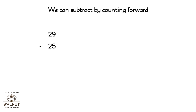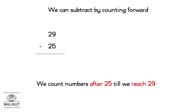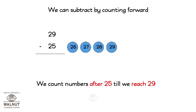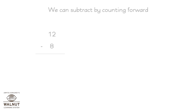Now 29 minus 25. We count the numbers after 25 until we reach 29: 26, 27, 28, and 29. How many circles is that? 4. So 29 minus 25 is equal to 4.